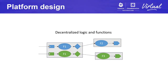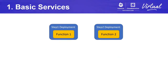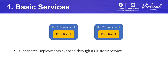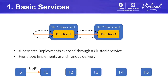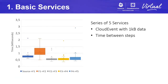Let's explore four options to deploy this on Kubernetes. Our first pattern is plain microservices. We use Kubernetes deployments and expose them as services. To pass control from one step to another, we can simply use service requests. The event loops have to be implemented as asynchronous APIs to hand over control and not interlock the services. To benchmark this, we set up a series of five steps and traced the time to hand over control between every step. The implementation sends a cloud event with one kilobyte of random data. The chart shows a boxplot for each step with the time measured between making the service request and receiving it at the next step. The median time for transmission across all steps is only 620 microseconds.